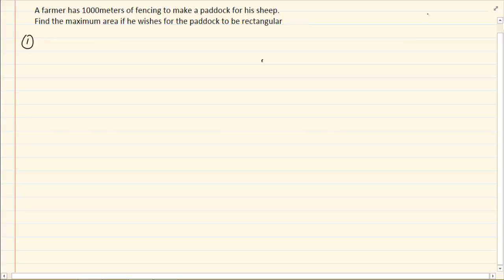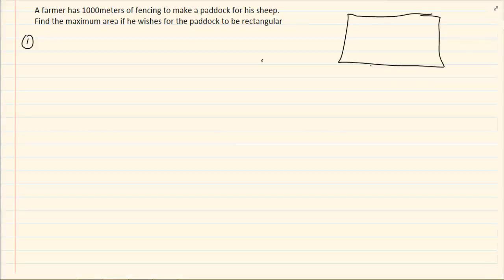The guy has a rectangular space. We know that his perimeter is going to be equal to a thousand. It can't be more than a thousand because he only has a thousand. So, if we have the length as x, then the side is also going to be x. We only have a thousand meters. So, if I have x plus x, then these two sides would have to equal to a thousand minus 2x divided by 2.